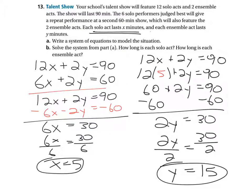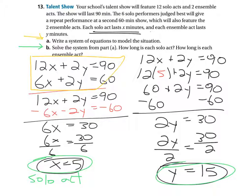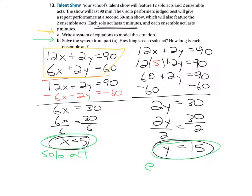So what did they ask us to do? Let's identify what they asked us to do and box it out. They asked us to write a system of equations to model the situation and we did. This is the system of equations here boxed in yellow. And solve the system. How long is each solo act? How long is each ensemble act? That's in green. And that's how long each one is. The solo act and ensemble act. That's it.